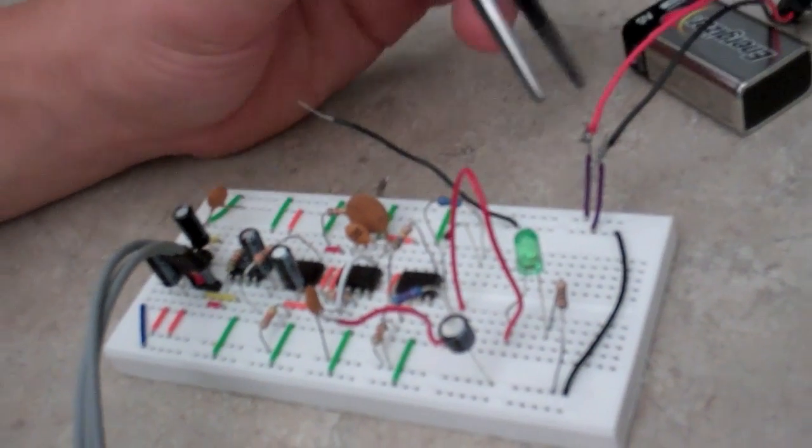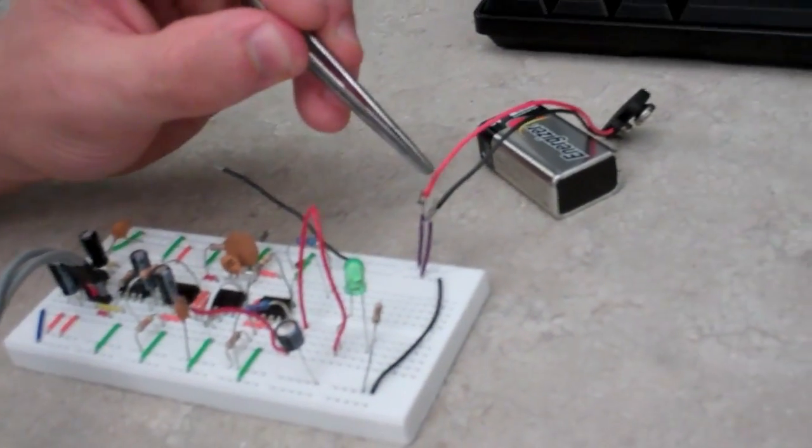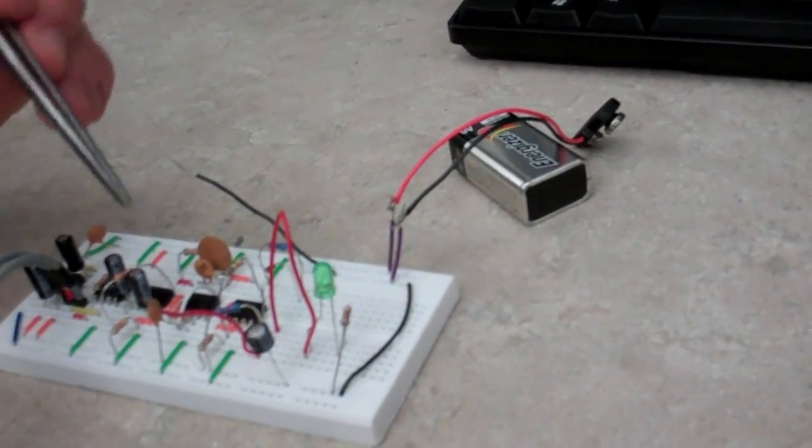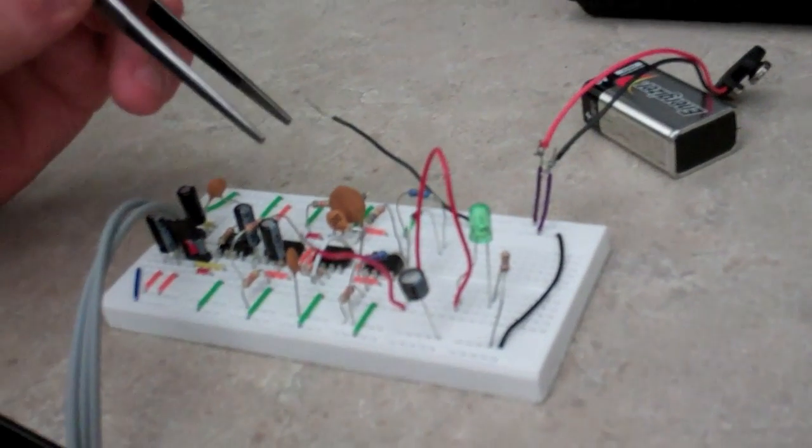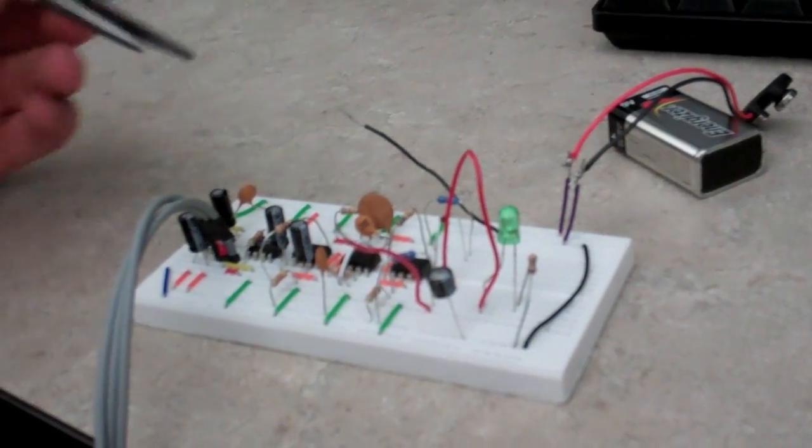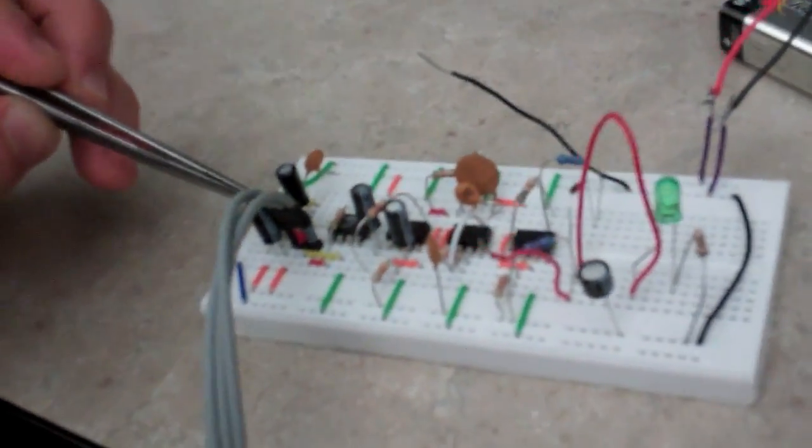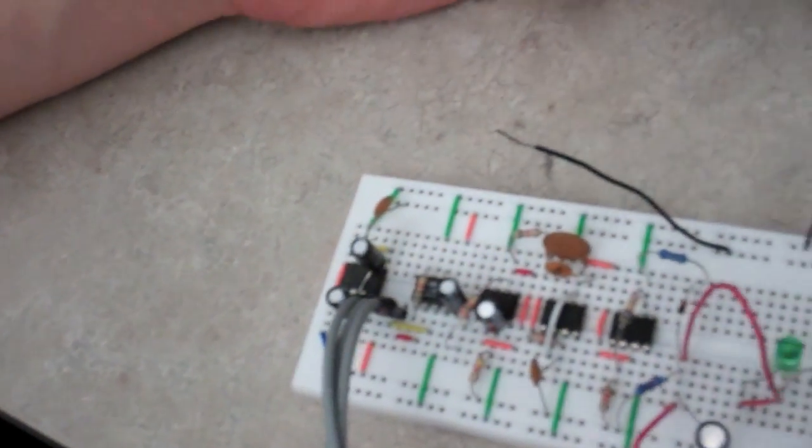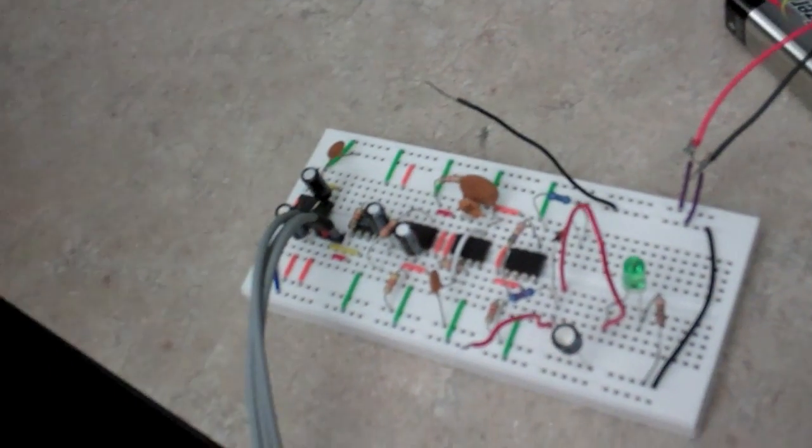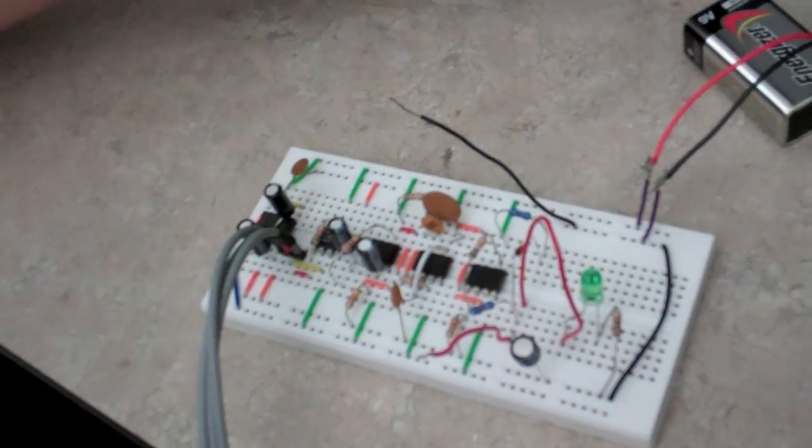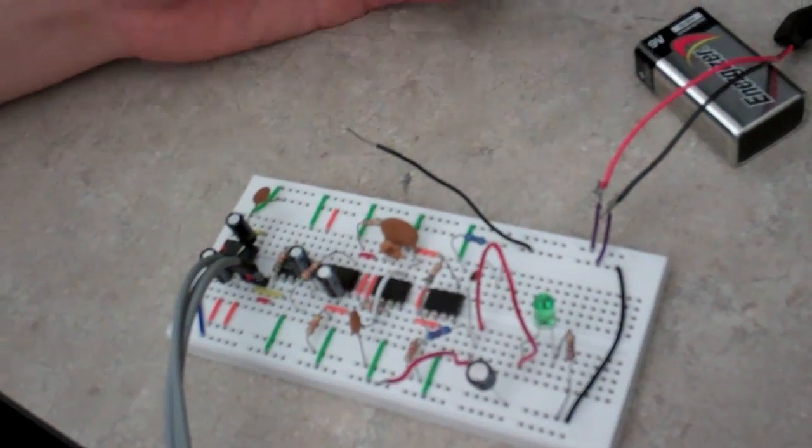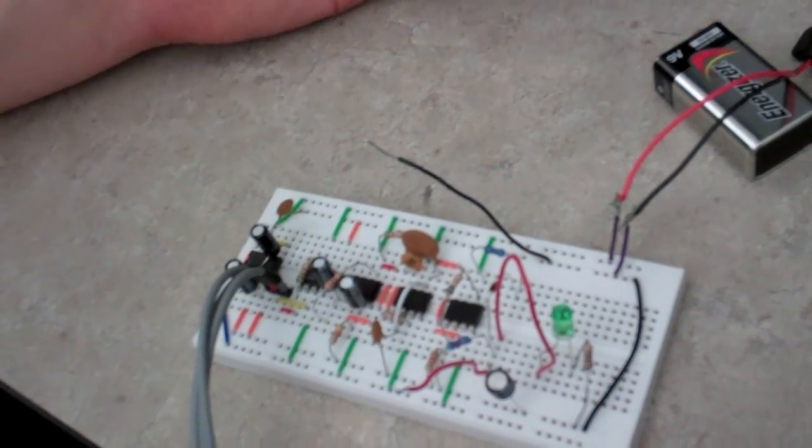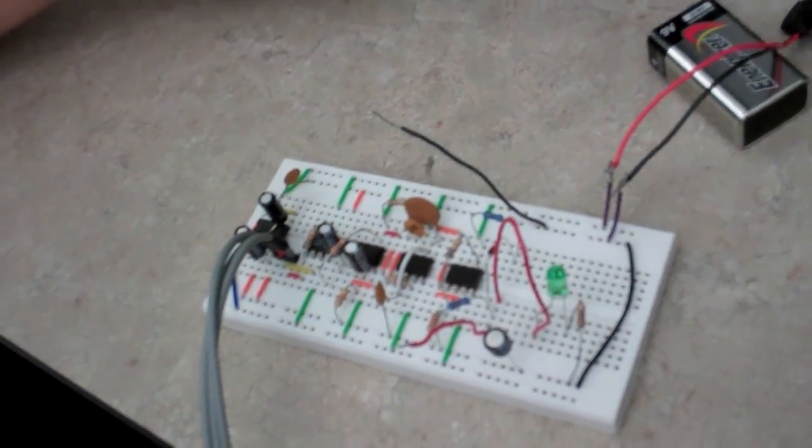You'll notice I only have one battery over here, and yet I'm using a plus nine and minus nine rail. That's because of this chip on the far left. It's a Maxim 1044. This thing takes a plus nine voltage and it spits out a minus nine. And that way I can use one battery and get plus nine and minus nine volts. And that's how it works.